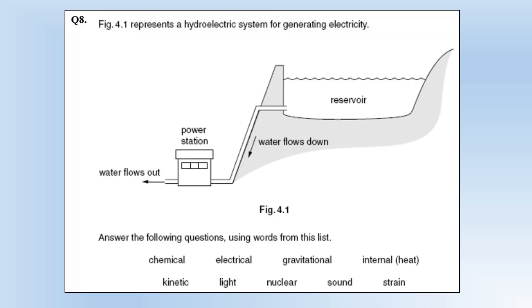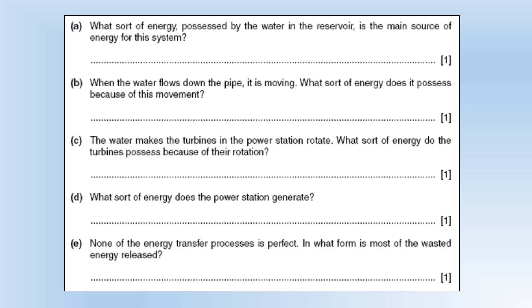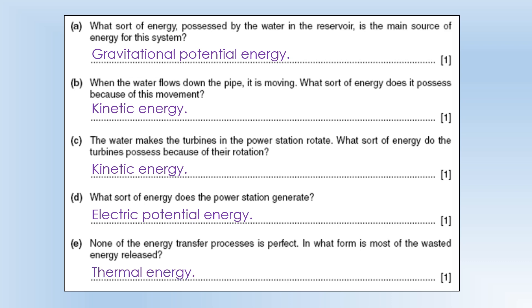The diagram represents a hydroelectric system for generating electricity. Answer the following questions using words from this list - we've essentially got types of energy. What sort of energy possessed by the water in the reservoir is the main source of energy for the system? It's lifted up high so we've stored gravitational potential energy. When water flows down the pipe it is moving, so therefore it has kinetic energy. The water makes the turbines rotate. What sort of energy do the turbines possess? Kinetic energy - they're moving. What sort of energy does the power station generate? Electric potential energy. None of the energy transfer processes is perfect. In what form is most of the wasted energy released? Thermal energy or heat or internal energy.